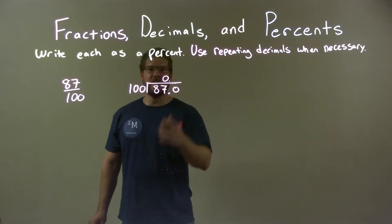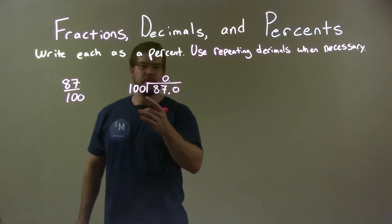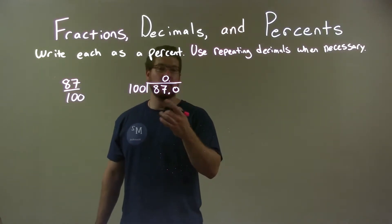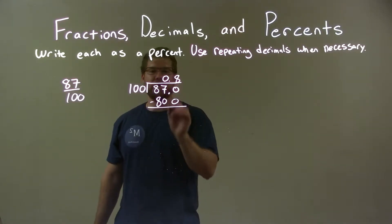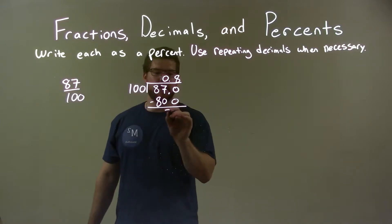So 100 goes into 870. Well, 100 doesn't go into 87 evenly, but it can go into 800 eight times. So 8 times 100 is 800. We subtract that, 870 minus 800 is just 70.